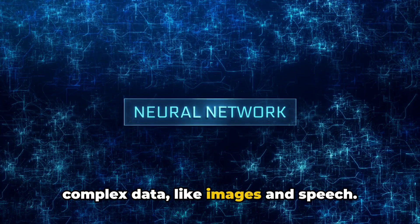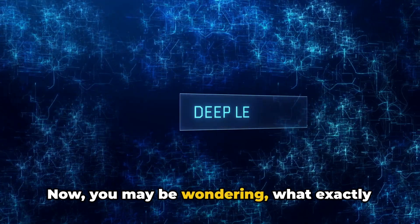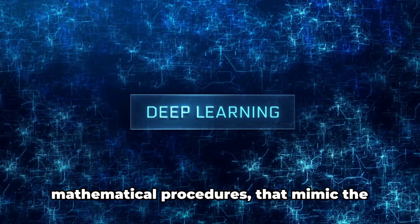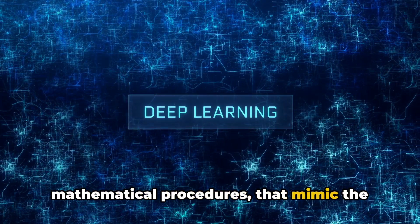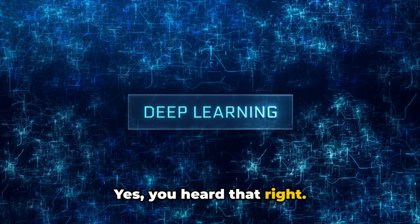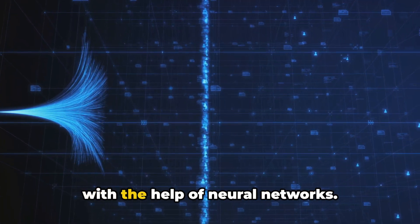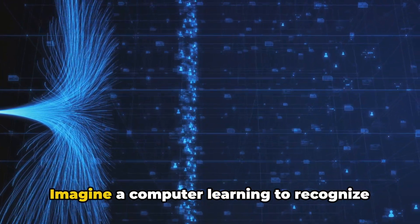Now you may be wondering, what exactly are these neural networks? In essence, they are a series of algorithms or mathematical procedures that mimic the human brain. Yes, you heard that right. Just as your brain processes and learns from information, so too can a computer with the help of neural networks.